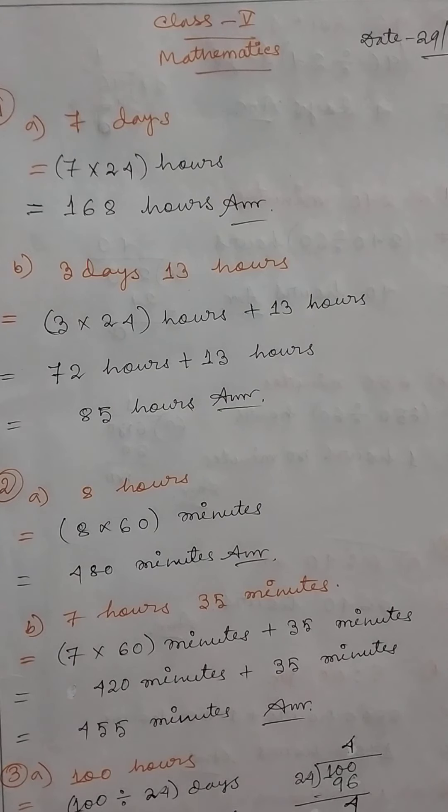Number 3: Convert the following into days and hours. 100 hours: divide by 24. 100 divided by 24 equals 4 days and 4 hours.